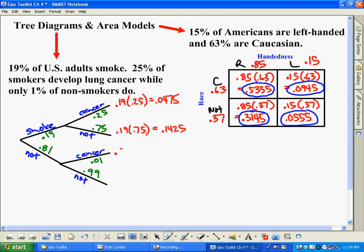Same thing here. You take 0.81 times 0.01, that's these two branches, branch, branch. And when you multiply that, you get 0.0081.